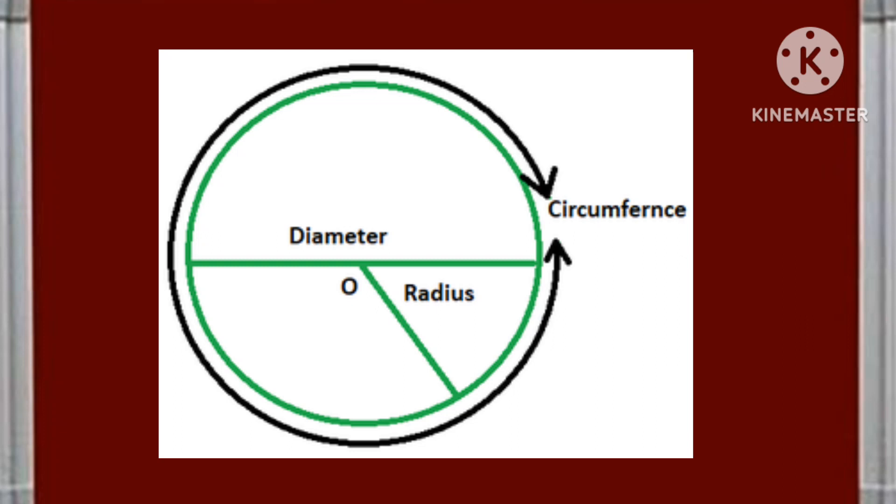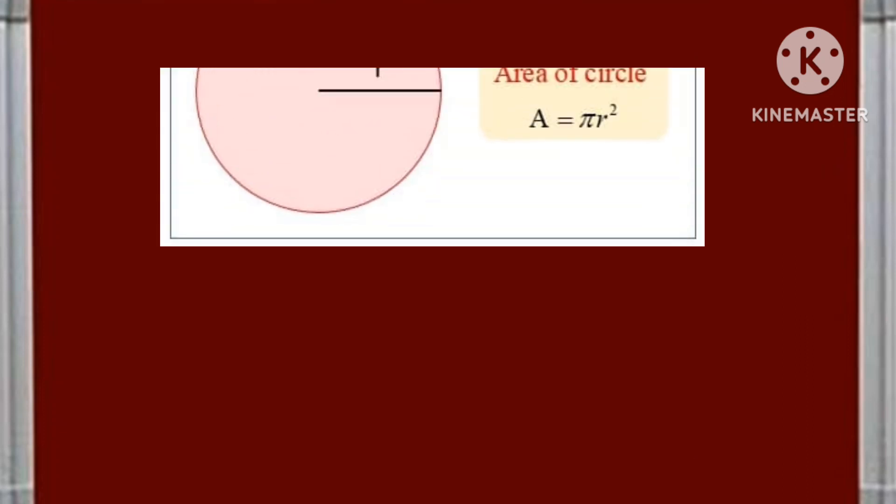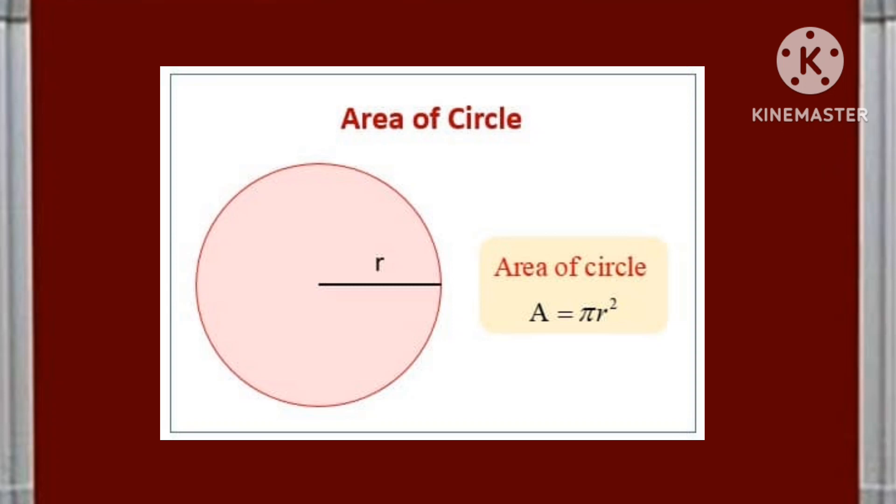In my part one video, I already explained about what is the radius of a circle, diameter of a circle and circumference of a circle. I think those ideas are clear to you. Today I am going to explain you about the area of a circle.